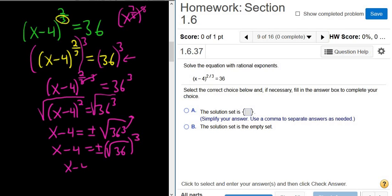So it's x minus 4 equals plus or minus the square root of 36 cubed. The square root of 36 is 6, so you get 6 cubed. x minus 4 equals plus or minus 6 cubed, which is 216.